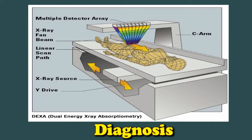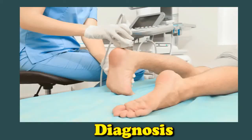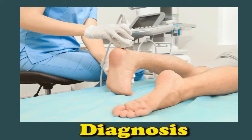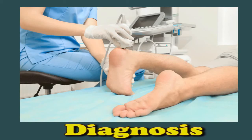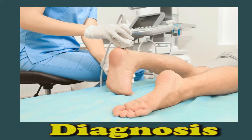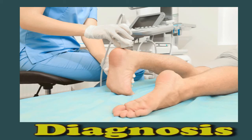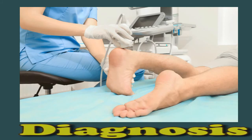Doctors give the results of the DEXA test as a T-score or a Z-score. The T-score compares an individual's bone mass with the peak bone mass of a younger person. A score of minus 1.0 or above shows good bone strength; from minus 1.1 to minus 2.4 suggests mild bone loss or osteopenia; and minus 2.5 or below indicates osteoporosis. The Z-score compares bone mass with that of other people of a similar build and age. A doctor will typically repeat the test every two years to compare results.